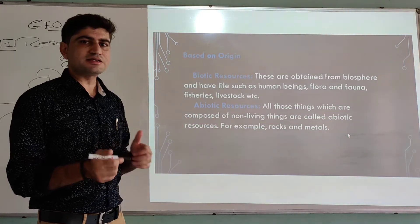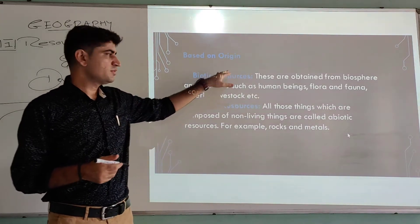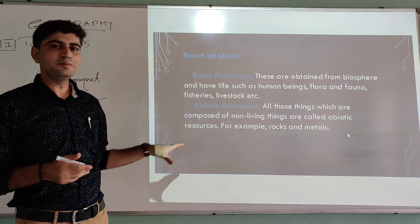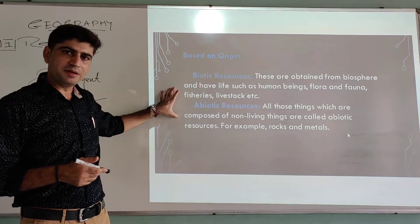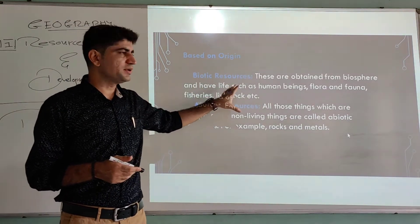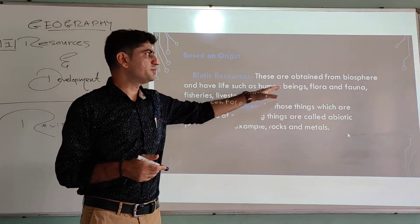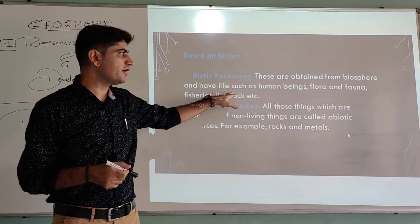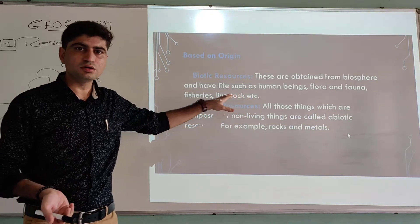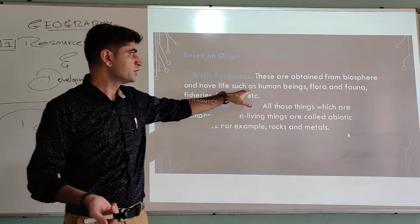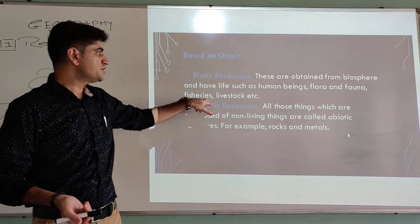So let's see classification of resources on the basis of origin. On the basis of origin, there are two subcategories: biotic and abiotic. Biotic means living beings — these are resources obtained from things that have life, such as human beings, plants, and animals. We are also a kind of resource.